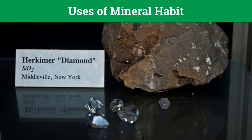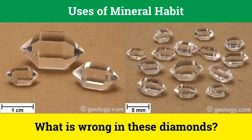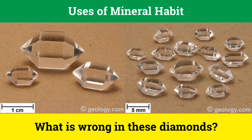Mineral habits are an important diagnostic property and are commonly used for identification of minerals in the field. When visible, they also tell the internal arrangement of atoms in a crystal. Knowing this helps us to identify what's wrong with the Herkimer diamonds shown here — they are actually doubly terminated quartz crystals of exceptional clarity and can be mistaken for diamonds. However, they are distinguished from diamonds on the basis of habit, because quartz shows hexagonal columnar habit whereas diamond shows octahedral habit.